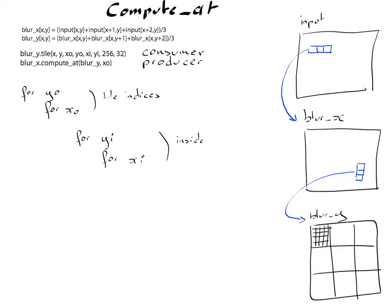So far, this is all about blur y. Now we need to take care of blur x, and we see that blur x is scheduled as compute at the level x0 of blur y.